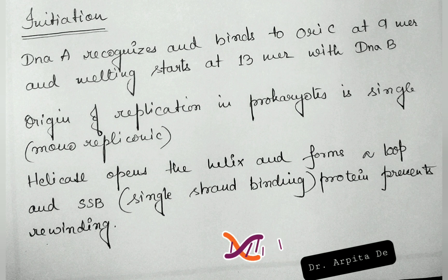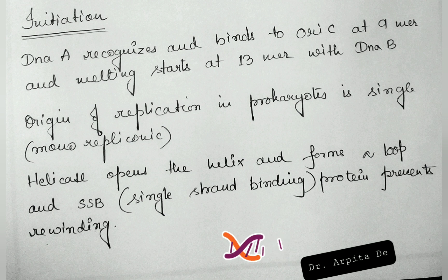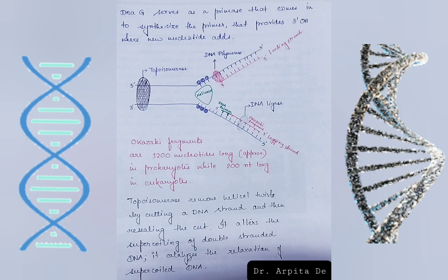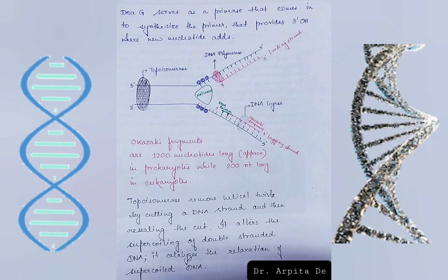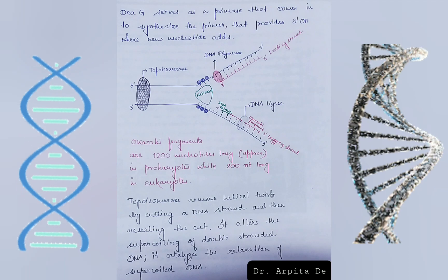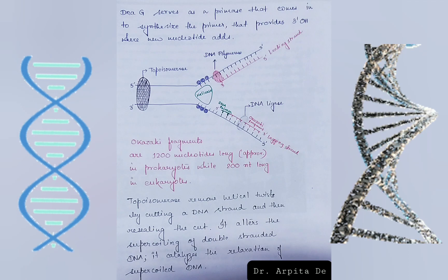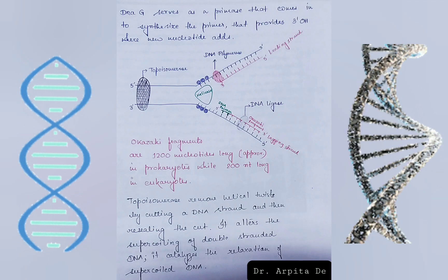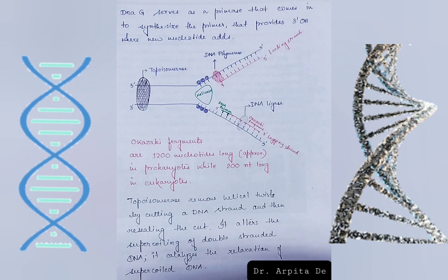Helicase opens the helix and forms a loop, and SSB — single-strand binding protein — prevents rewinding of DNA. DnaG serves as a primase that comes in to synthesize the primer, which provides the 3' OH group where new nucleotides are added.